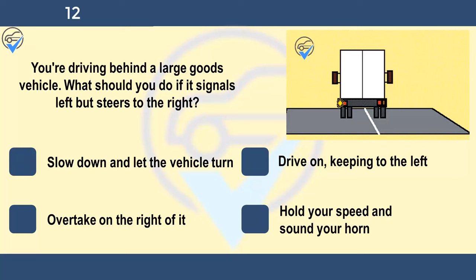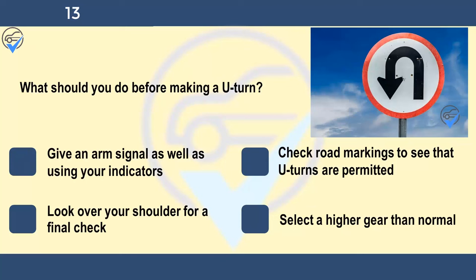You're driving behind a large goods vehicle. What should you do if it signals left but steers to the right? Slow down and let the vehicle turn, drive on keeping to the left, overtake on the right of it, or hold your speed and sound your horn. Large, long vehicles need extra room when making turns at junctions. They may move out to the right in order to make a left turn. Keep well back and don't attempt to pass them on their left.